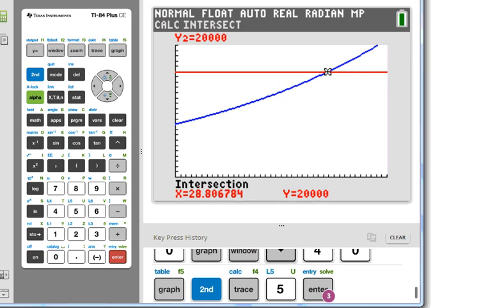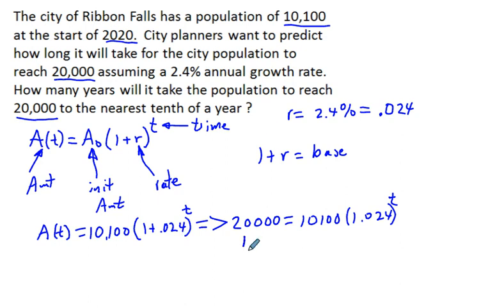So t equals 28.8 years. How many years will it take? 28.8, that's what it's going to be, 28.8 years. That's going to be 2048.8, or the year 2048.8.